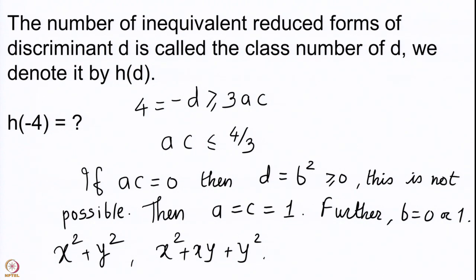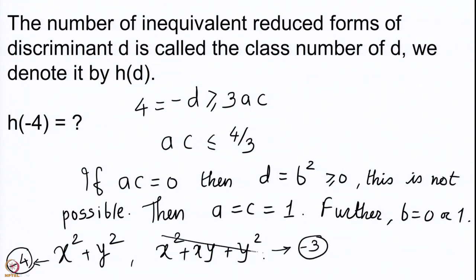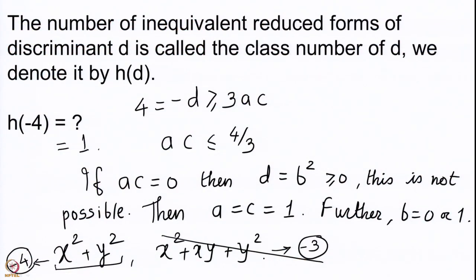These are the two possible forms satisfying the bound given by the discriminant being equal to −4. We need to check whether these two forms have the required discriminant. The discriminant of x² + y² is −4, so this form is okay. For x² + xy + y², the discriminant is 1 − 4 = −3, so this form is not taken. We take only x² + y², which is the only reduced form of discriminant −4. Therefore h(−4) = 1.